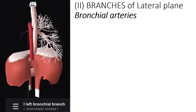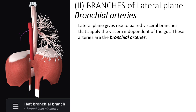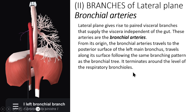The lateral plane gives rise to paired visceral branches that supply the viscera independent of the gut. These arteries are the bronchial arteries. From their origin, the bronchial arteries travel to the posterior surface of the left main bronchus and the right main bronchus, traveling along the surface and following the same branching pattern as the bronchial tree. They terminate around the level of the respiratory bronchioles.